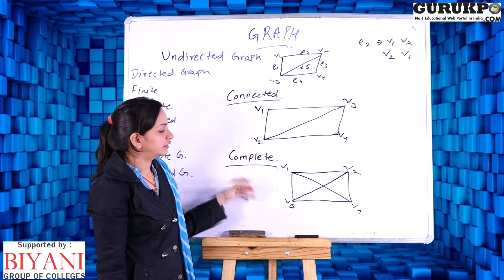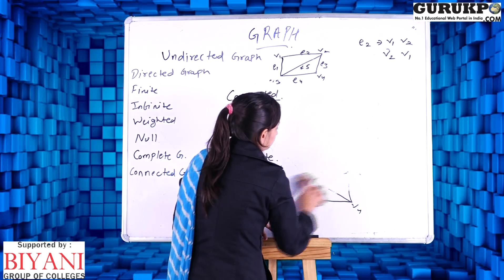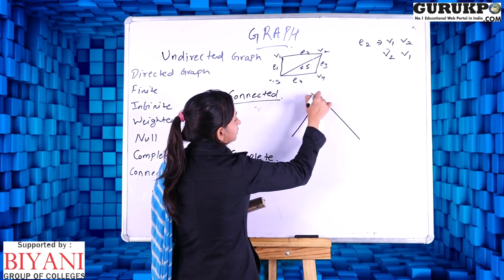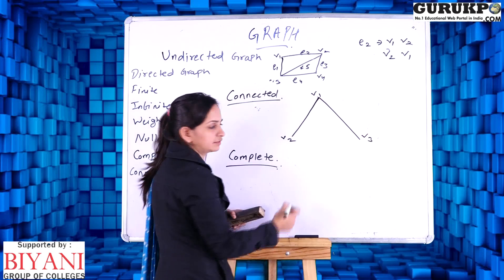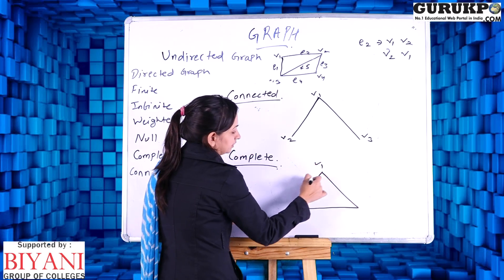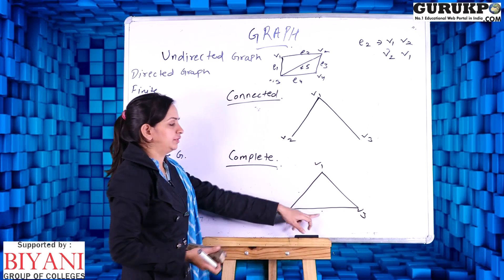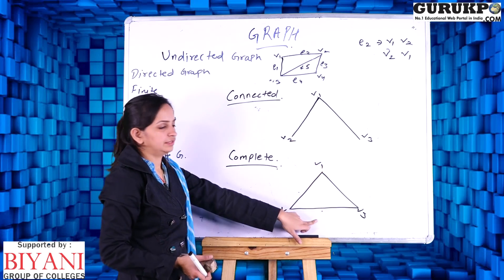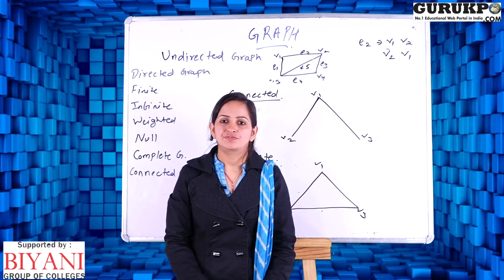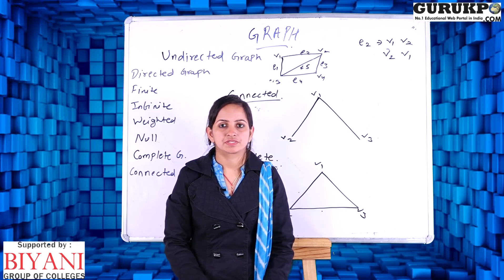Let us look at some more examples. For a three-vertex graph with V1, V2, and V3, this is a connected graph. If I draw a complete graph, V1 is connected to both V2 and V3, V2 is connected to both, and V3 is connected to both — now it is a complete graph. It is both a connected graph and a complete graph. You can draw any number of vertices for connected and complete graphs and observe the examples. Thank you so much for watching my video. If you like my content please like, comment, share, and subscribe to our channel. Thank you once again.